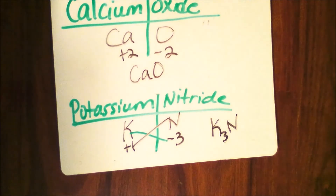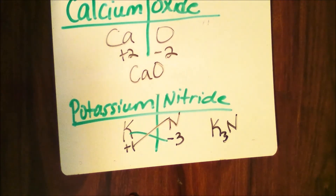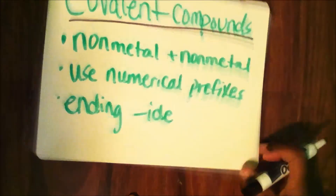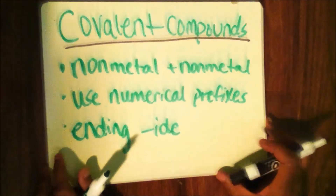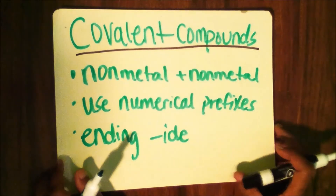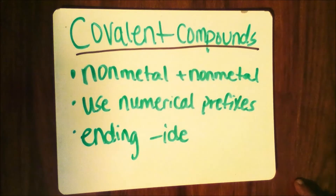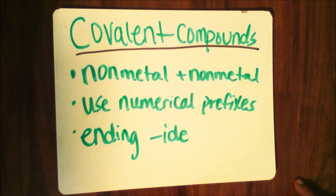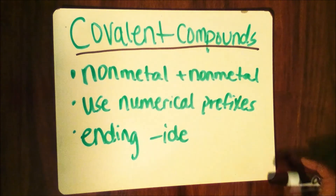Now let's take a look at another type — covalent compounds. These compounds have nonmetal and nonmetal bonding. They use numerical prefixes such as mono, di, tri, tetra, hepta, and octa. The ending is -IDE. Let's take a look at four examples.